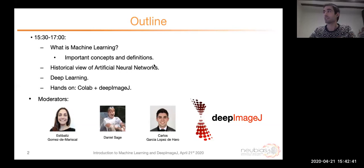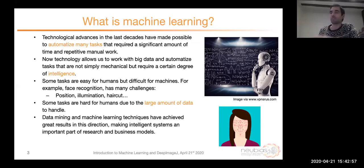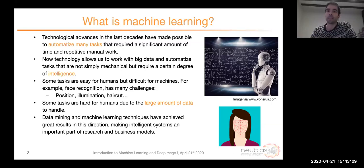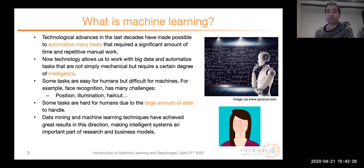Let's start with the basics: what is machine learning? Even people who work on it every day sometimes have trouble defining it. When I teach computer vision students, I put up this first slide where I tell them that thanks to technology in the last decade — if not centuries — we've made it possible to automate many tasks that require a significant amount of time and especially repetitive manual work. Now, thanks to technology and the use of big data, we can automate tasks that are not only mechanical but also require a certain degree of intelligence.